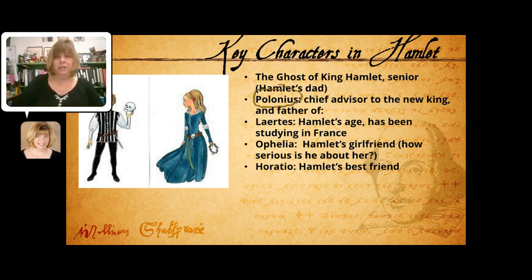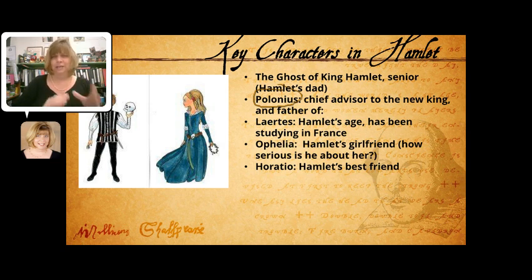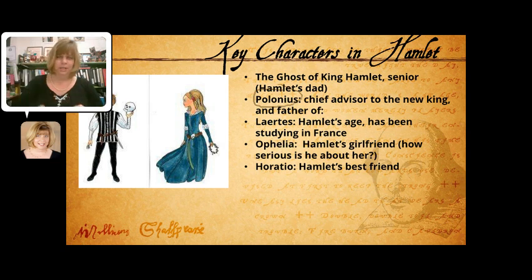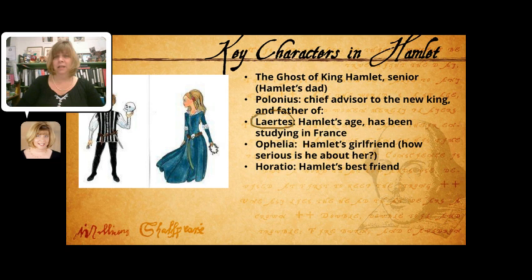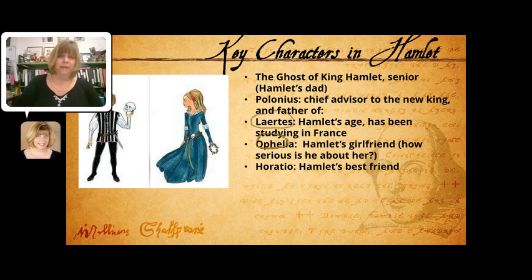We'll also meet Polonius — the chief advisor to the new king, kind of the Lord Chancellor. He hangs around the court all the time, is always talking, and loves to make long speeches — he's kind of a windbag. He has a son, Laertes, who is about Hamlet's age. Just as Hamlet has been away at college, Laertes has also been away studying in France, and he's also come back for the funeral of the king.